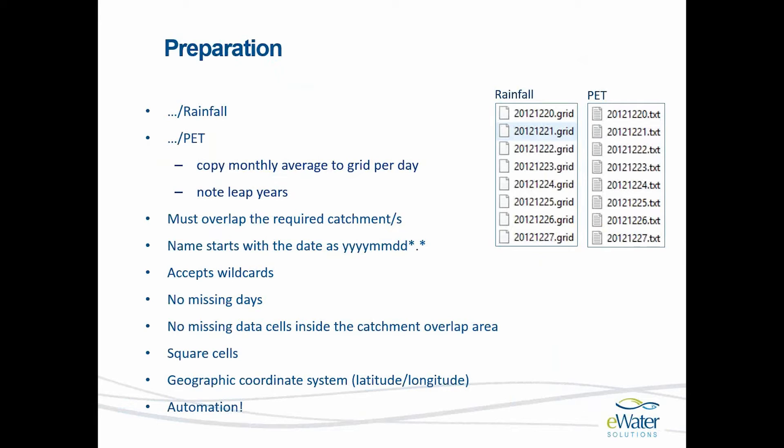There must be no missing days in the time series of grids, and the extent of the grids must completely overlap the required catchments with no missing data cells inside that catchment overlap area. Your grid cells must also be square and in a geographic coordinate system in latitudes and longitudes. Because one is working with a lot of grids — one for every day in a long time series — it's very important to script and automate the naming and formatting of these data sets, perhaps using R or any other scripting language you're comfortable with.